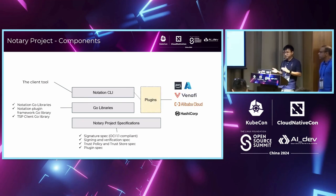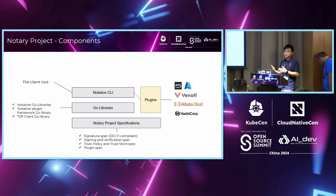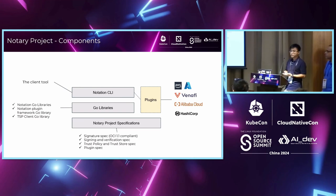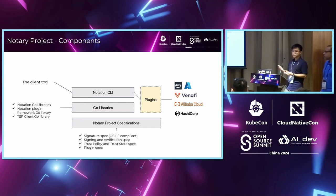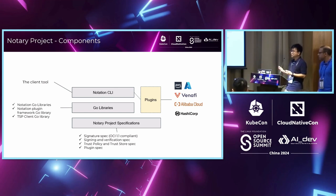We also deliver the notation tool, which you can use directly on any platform for signing and verifying container images. Additionally, we're building a plug-in framework so you can integrate with different key management systems provided by different vendors. We already have plug-ins for AWS Signer, Azure Key Vault, Azure Trusted Signing, HashiCorp Vault, and recently Alibaba Cloud open-sourced their secret manager plug-in for the notation tooling. With this framework, you can integrate with different cloud providers and customize your sign-and-verify workflow.